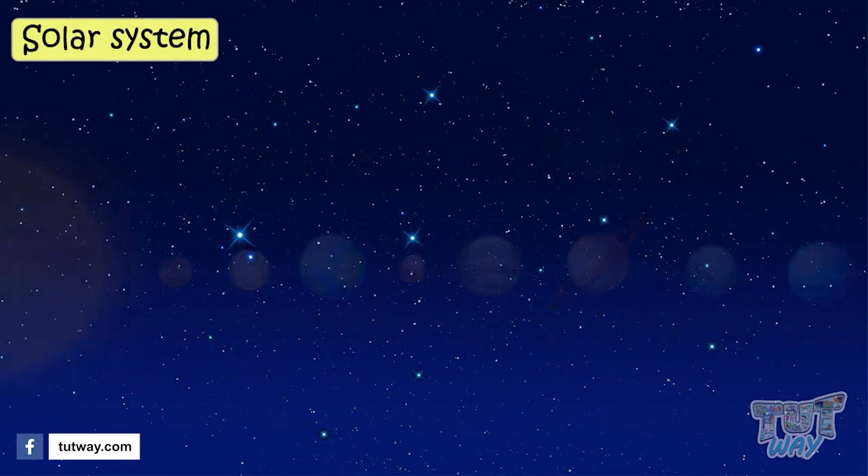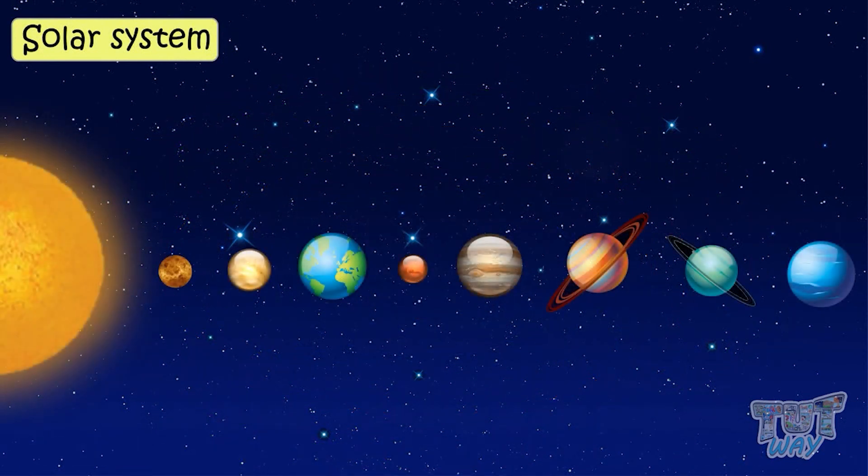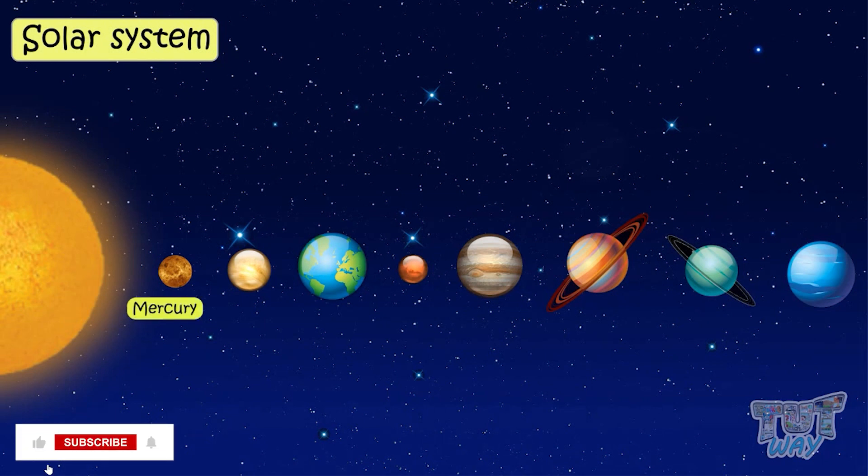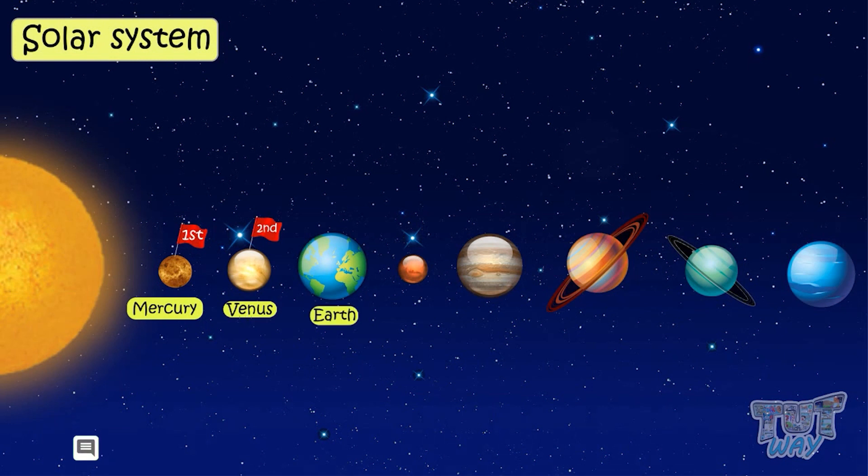There are eight planets that revolve around the Sun. Let's learn their names in order of their position from the Sun. Mercury, which is the first or nearest. Then Venus, then Earth, our planet on which we live. It is the third planet. Then comes Mars.